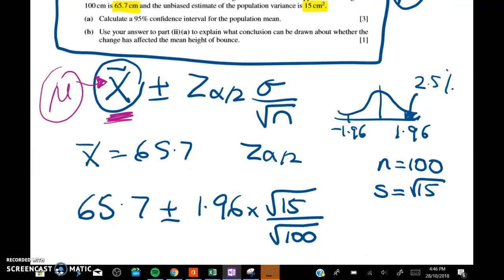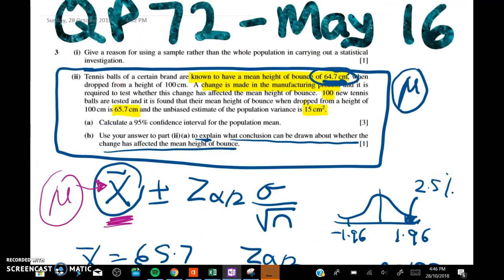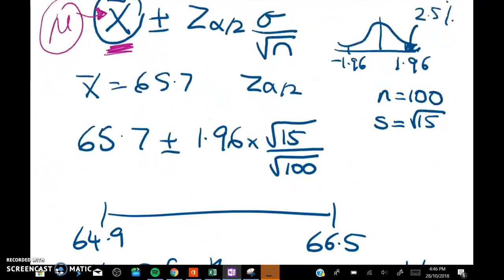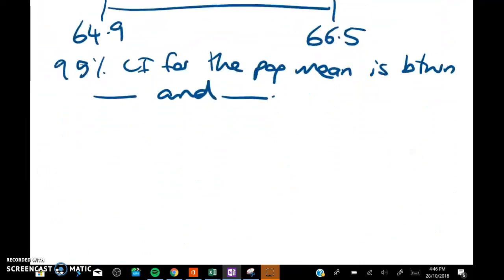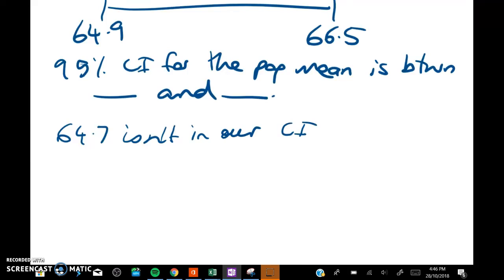Well, we have to use our answer to explain what conclusion can be drawn about whether the change has affected the mean height of bounce. Remember, the old mean was 64.7, so we just want to have a look and see if that's in or not in my confidence interval. So 64.7 isn't in our CI—all the values are above it.